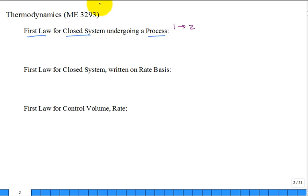So the first law of thermodynamics for closed system undergoing a process from initial state 1 to final state 2, can we write that from memory? Do we need an equation sheet or do we learn it?